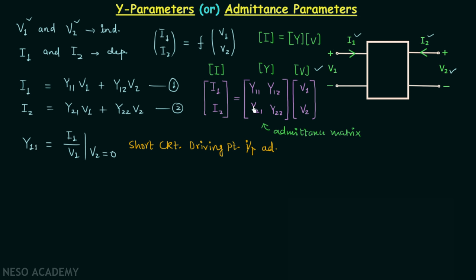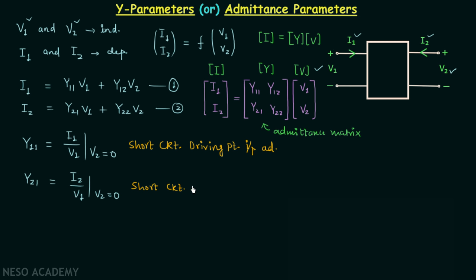Next, Y21 equals I2 divided by V1 when V2 equals 0. Since V2 equals 0, the output port is short-circuited. Current divided by voltage gives admittance, and since we have a parameter of the output divided by a parameter of the input, this is the short-circuit forward transfer admittance.